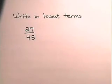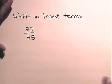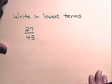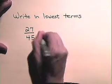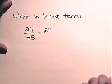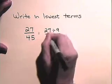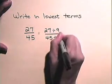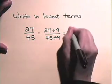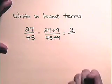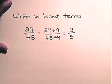Now we will look at an example of writing a fraction in lowest terms. We are going to take the fraction twenty-seven over forty-five and write it in lowest terms by dividing both the numerator and the denominator by the greatest factor they have in common, which is nine. Twenty-seven divided by nine is three, and forty-five divided by nine is five. So twenty-seven forty-fifths in lowest terms is three-fifths.